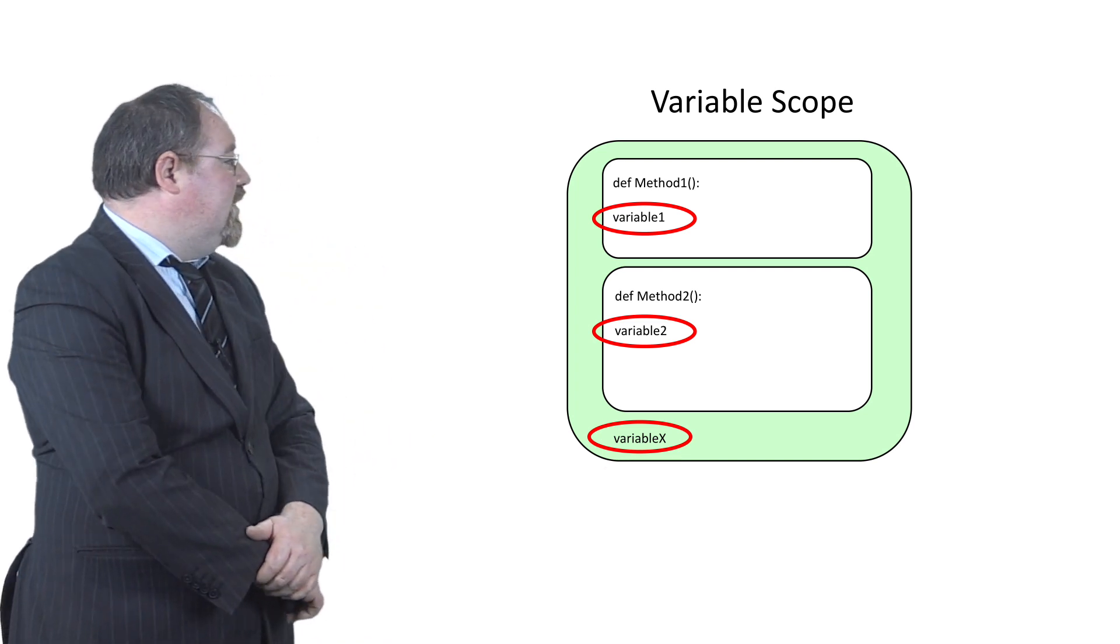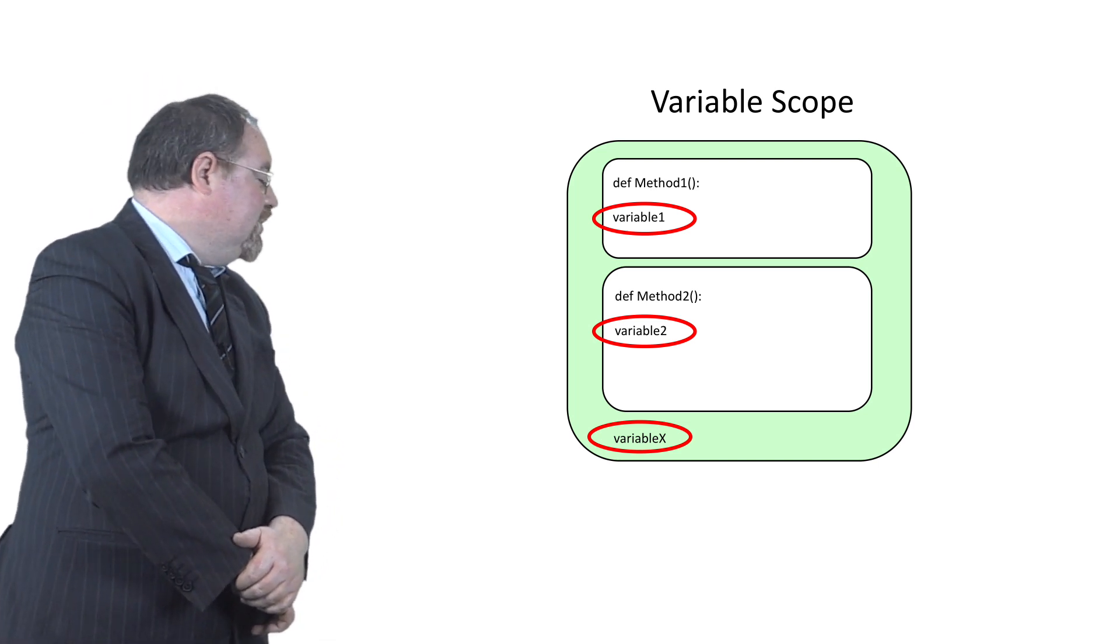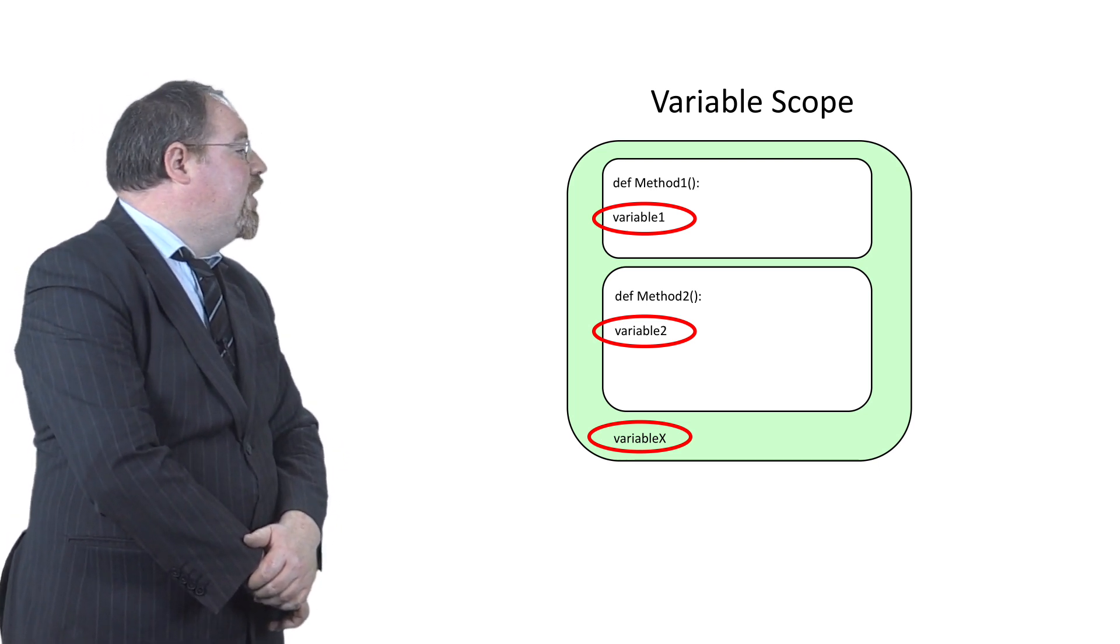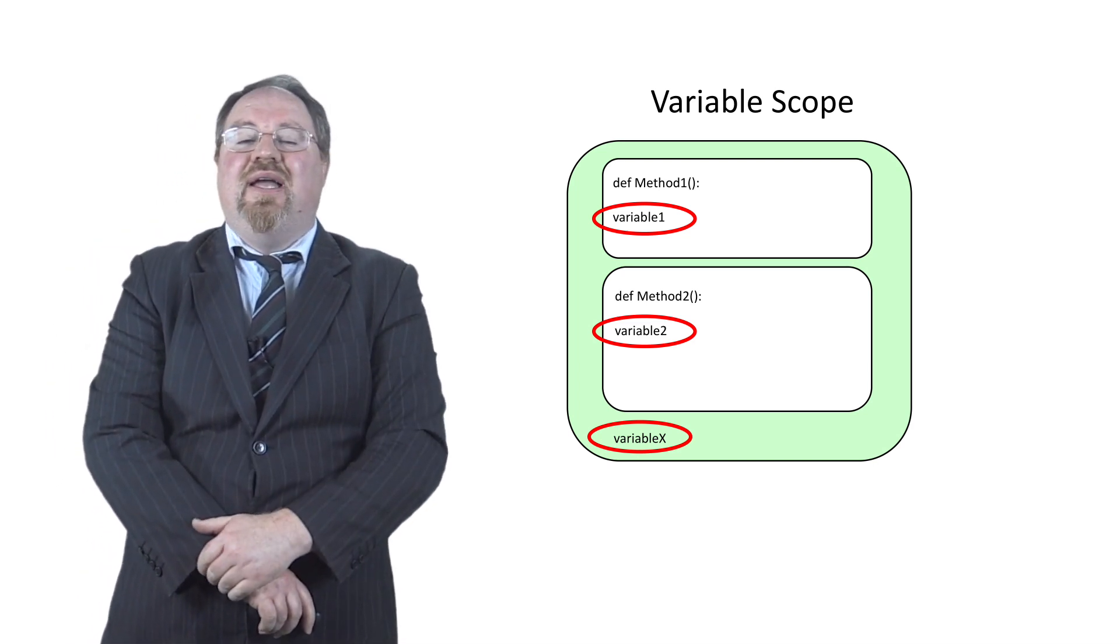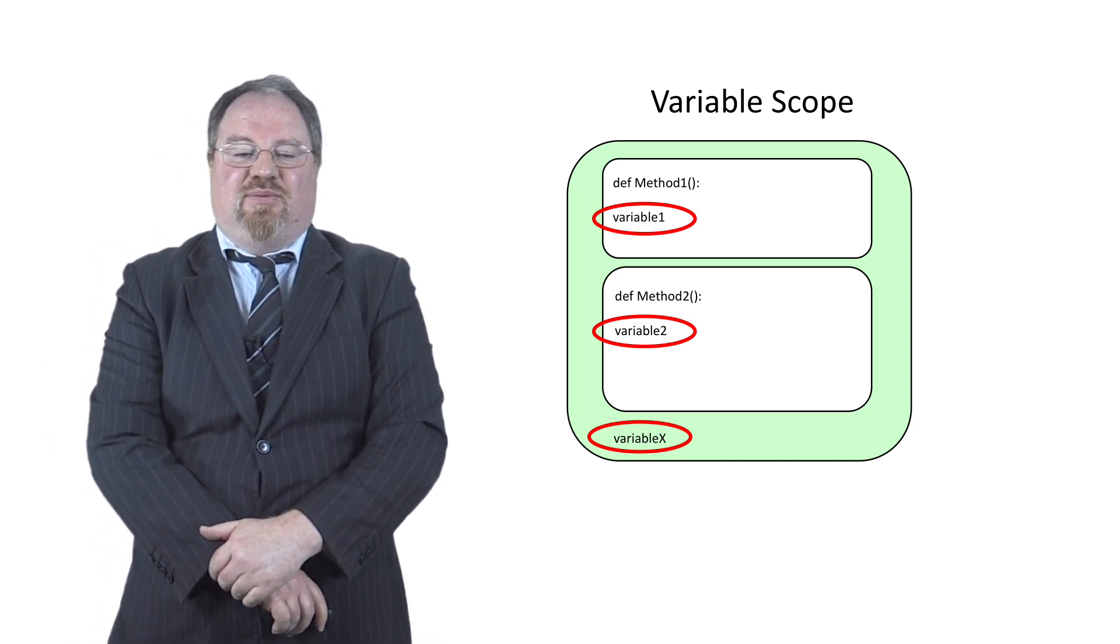So in our case here, variable one is only visible in method one. Variable two is only visible in method two, whereas variable x is visible for method one, for method two, and any other methods that exist within the program.